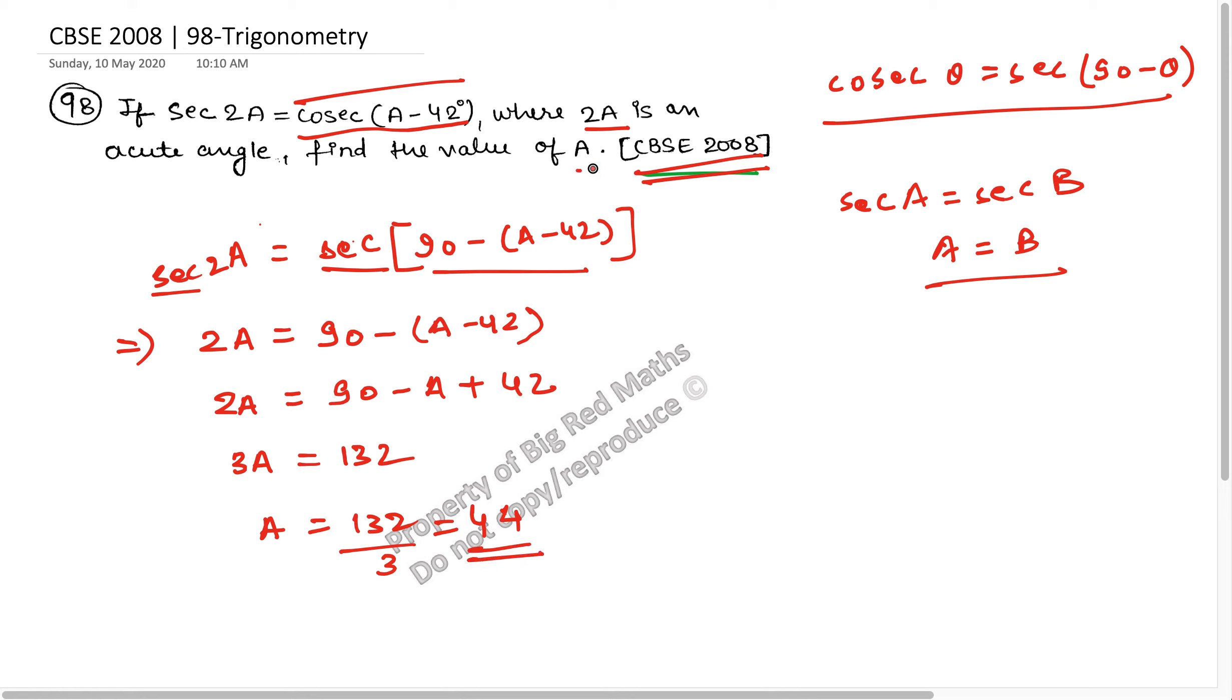So A is equal to 44 degrees, and this is the answer. We were to find the value of A. The value of A is 44 degrees. I hope you found the solution useful. Do like, share, comment, and subscribe. In case you want me to solve any other questions for you, do put down your queries at the WhatsApp number mentioned in the description. Till then, keep working hard, keep practicing hard. Cheers and God bless.